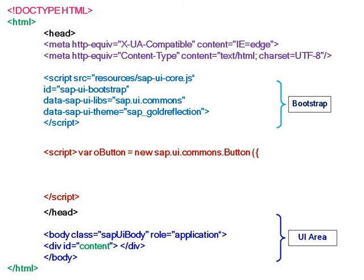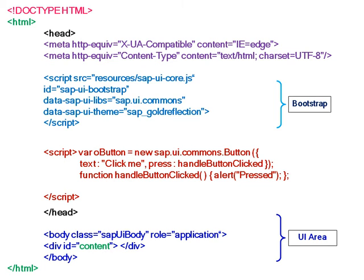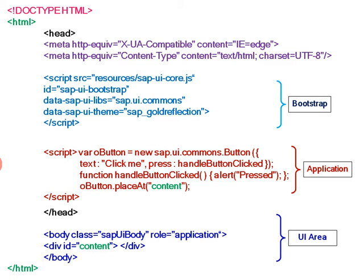Now the actual application — we will mention it in the second script. Here we are going to create a new button with the text 'Click me' and a function. This script area where we are creating an application is called the application area. This new button which we are going to create, we are placing in the content — that is the same div content.